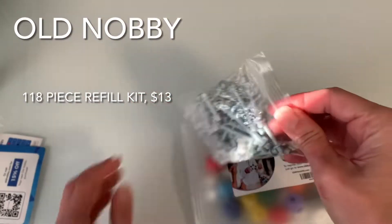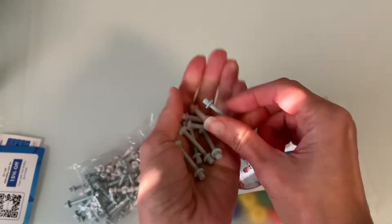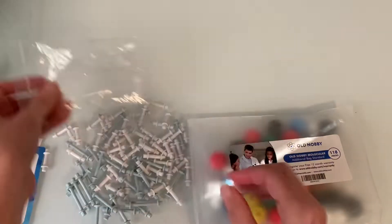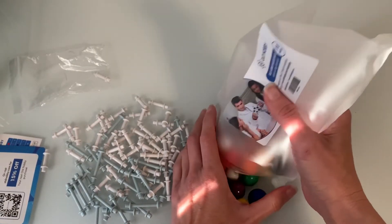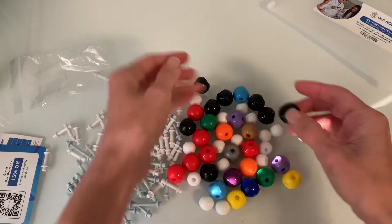Next I'm going to show you the Old Knobby kit. I chose a 118 piece refill kit and at the time of this video it only cost $13. This refill kit is designed to be added to one of the larger sets that Old Knobby makes but to be perfectly honest with you this set is large enough for any student in general chemistry or organic chemistry.